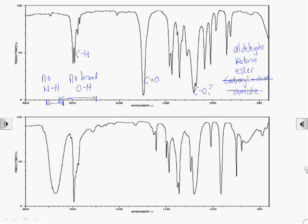And that's about as far as we can go based on the infrared alone. If we look at this second infrared spectrum, the lack of a peak at 1700 wavenumbers suggests no carbon-to-oxygen double bond, so no carbonyl.